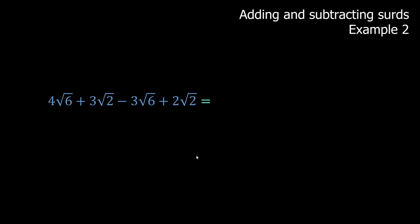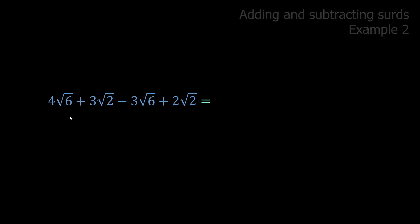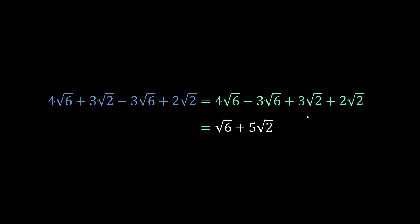This next example looks complicated but isn't. We move like terms next to each other — square root of six next to square root of six, square root of two next to square root of two. Four root six minus three root six gives one root six. And three root twos plus two root twos gives five root twos. So the answer is root six plus five root two.